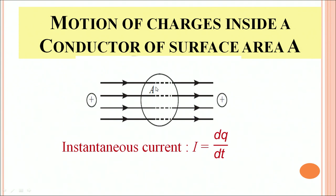If this rate of flow of charge changes with time, then we can talk about instantaneous current. Instantaneous means at that particular instant of time. So instantaneous current I would be defined as dq by dt.